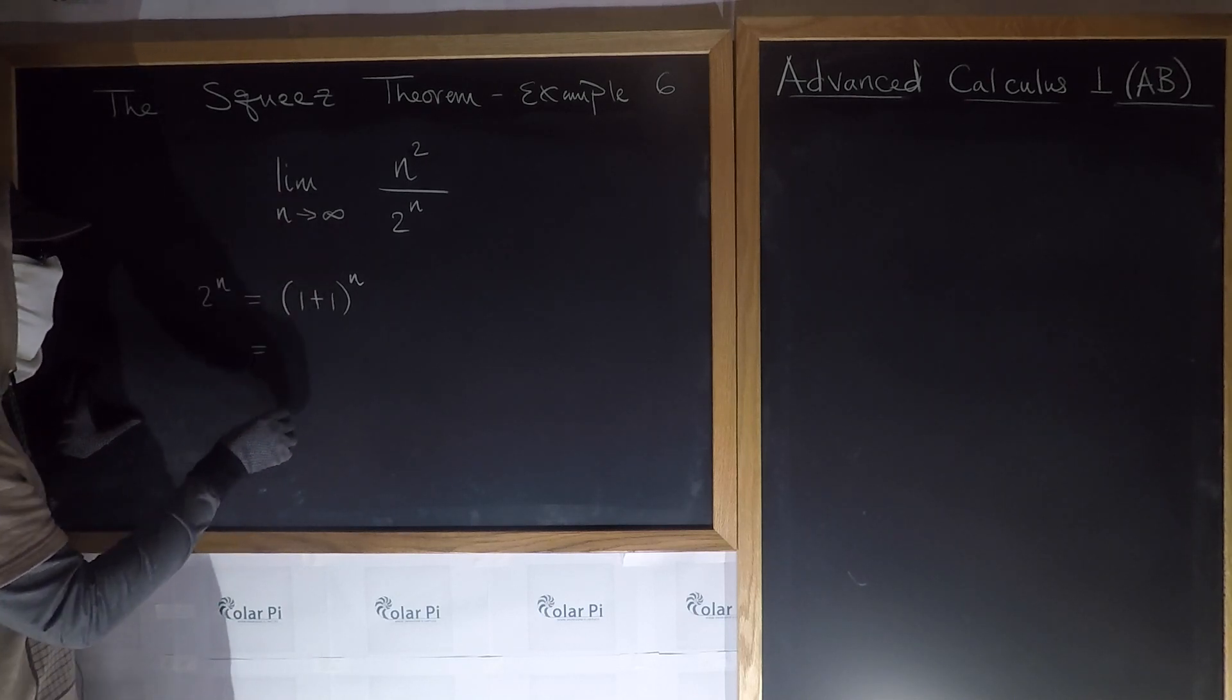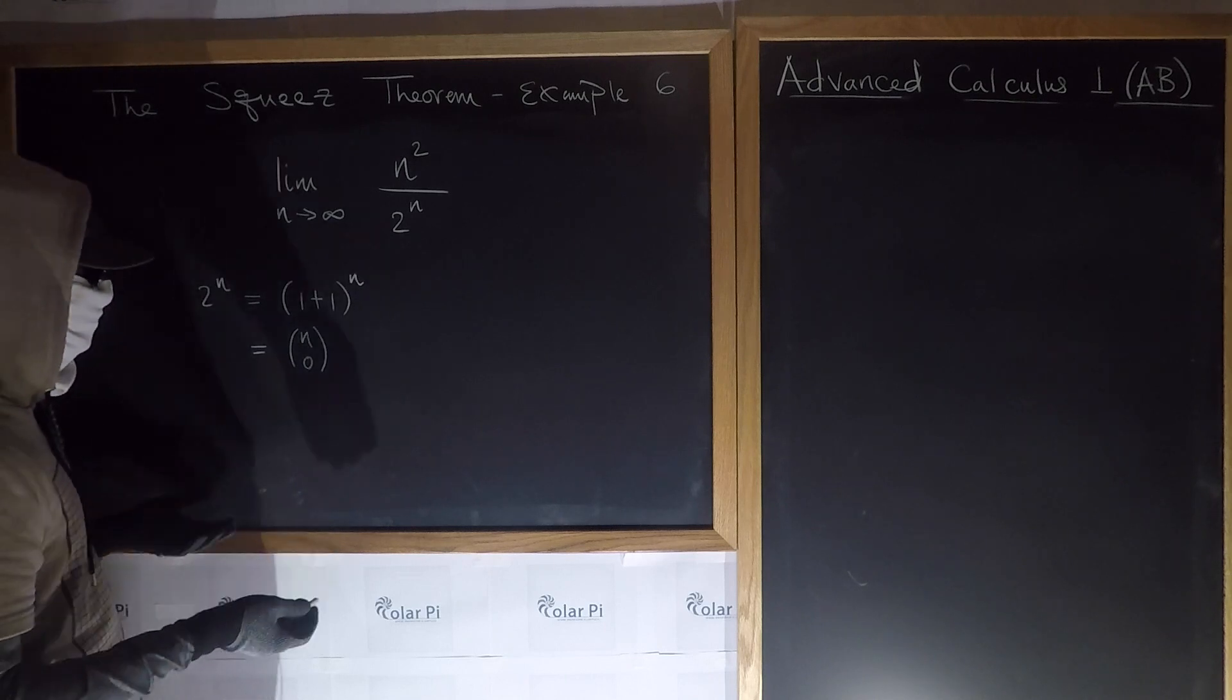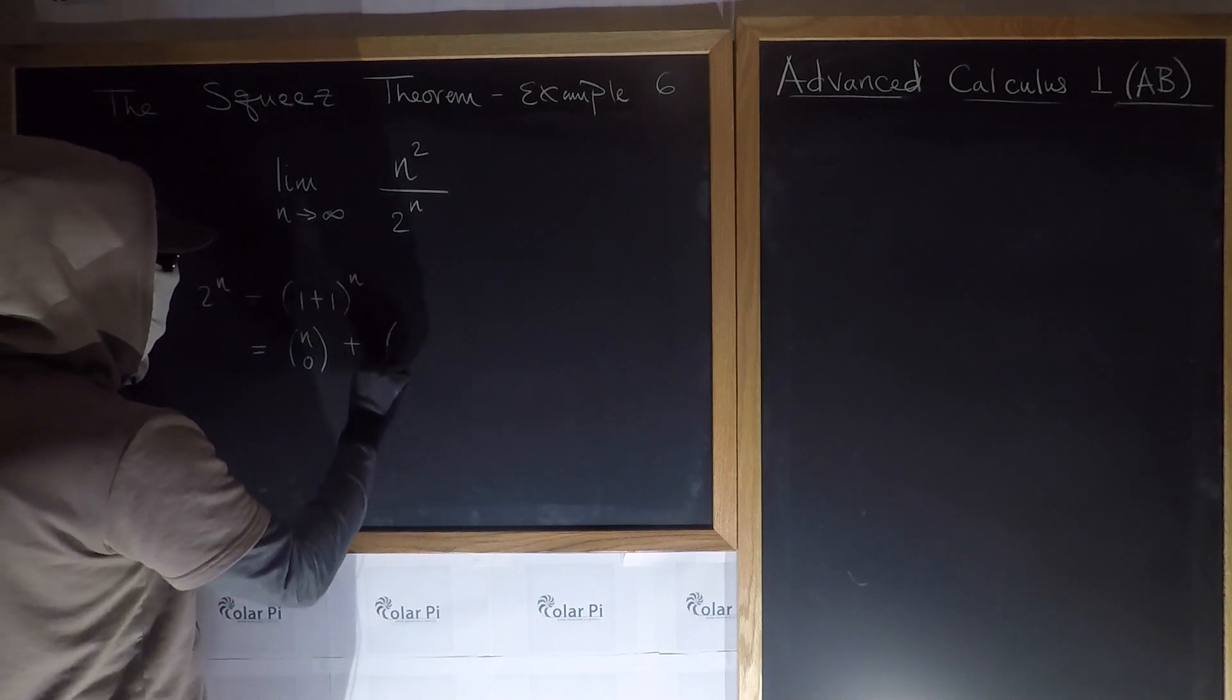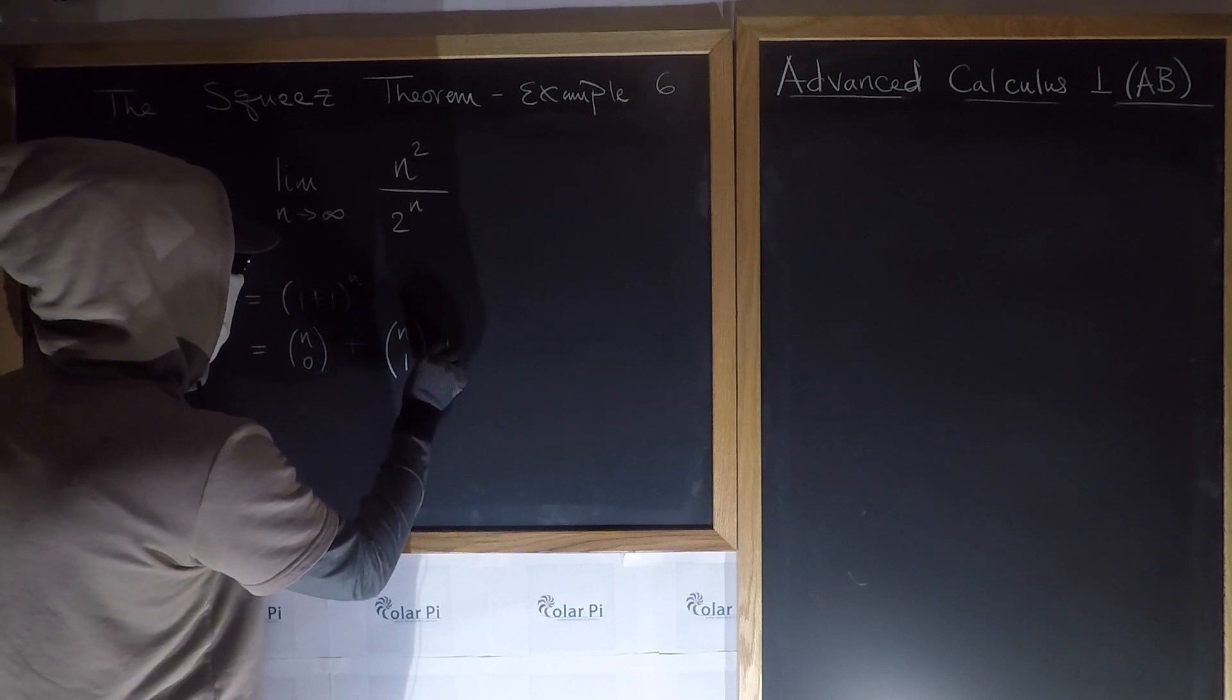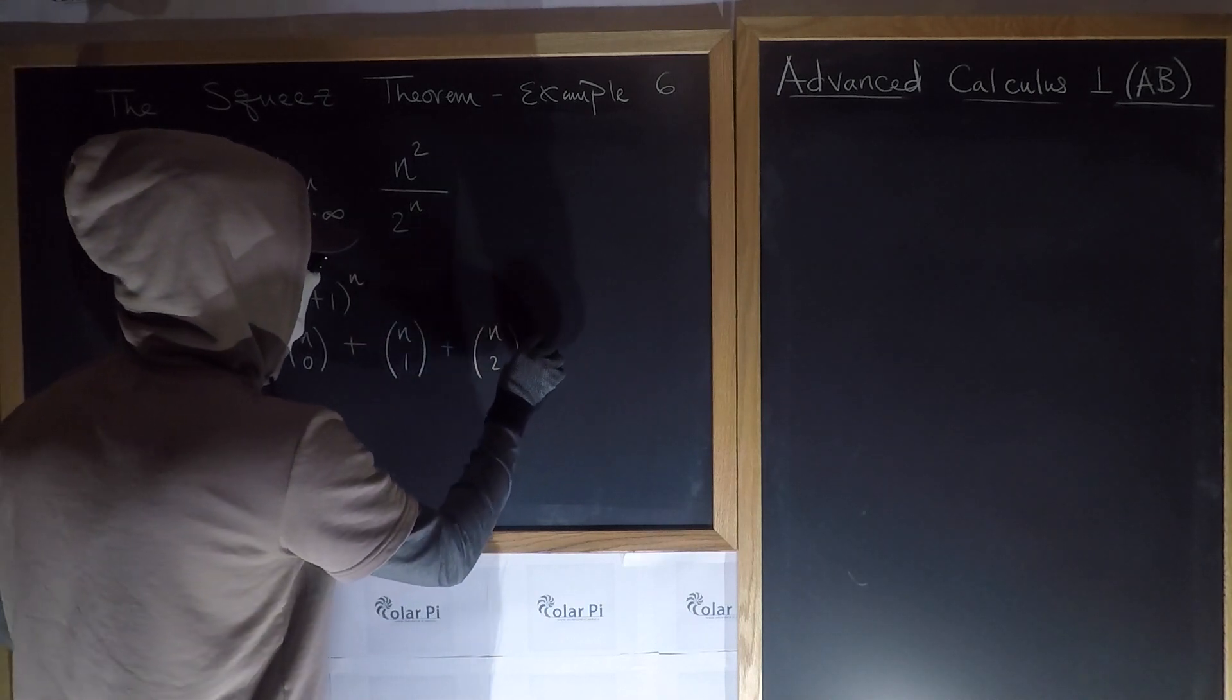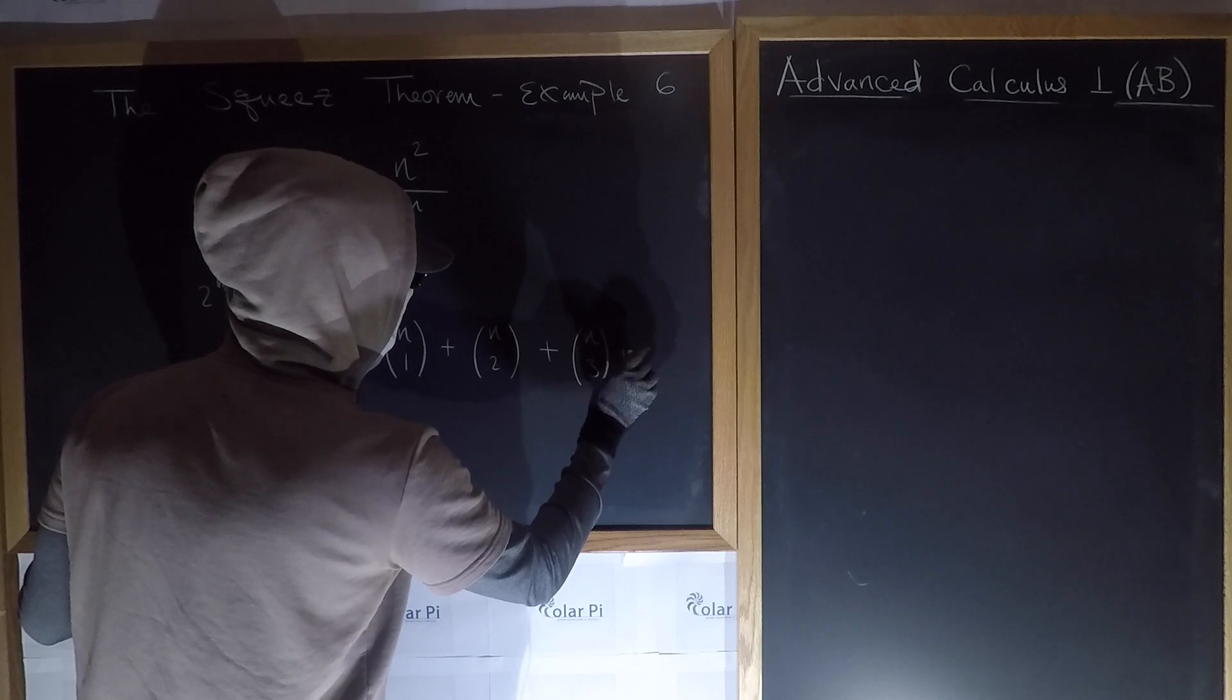we can write 1 plus 1 to the n as n choose 0, and then 1 to the n times 1 to the 0, won't bother writing, plus n choose 1, 1 to the n minus 1, and then 1 to the 1, won't bother writing, plus n choose 2, and then plus n choose 3, and then plus more terms,